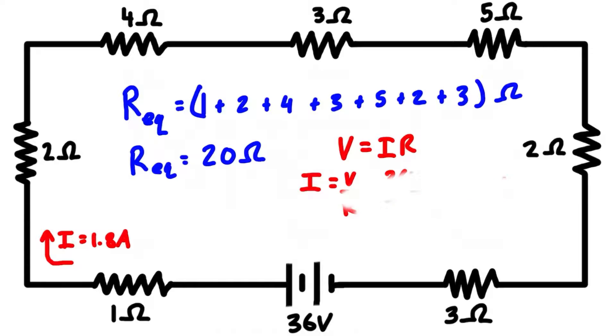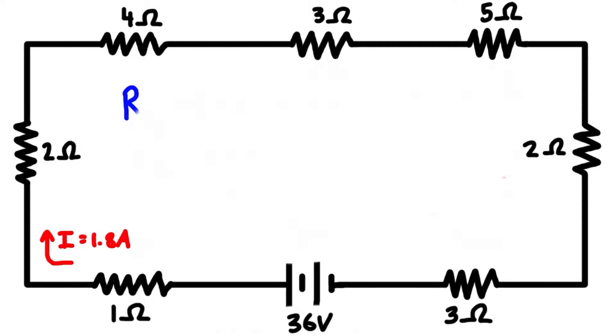We can label the current: I is equal to 1.8 amps. This is the current that's going to be passing through every resistor because there's only one path for the current to flow as it goes the whole way around.